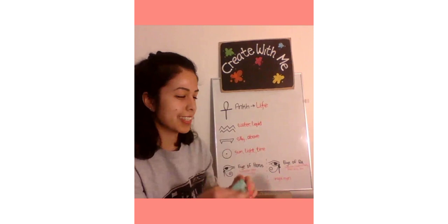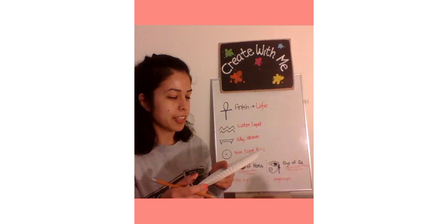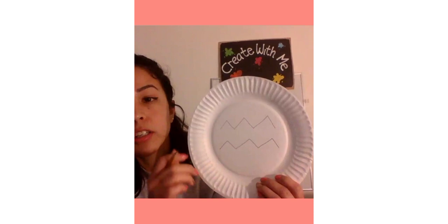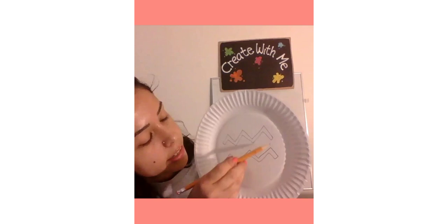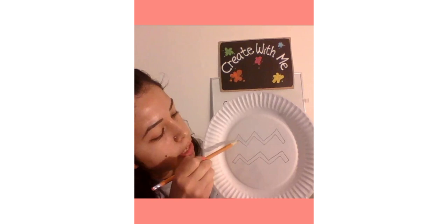Let's get started. You're going to take your thick paper or paper plate and draw your stencil. For me, I'm going to draw the water symbol. You first draw the basic lines like this, then draw a line right here and make it thicker, because this area is what we're going to cut out. You want to do that for the top and the bottom.